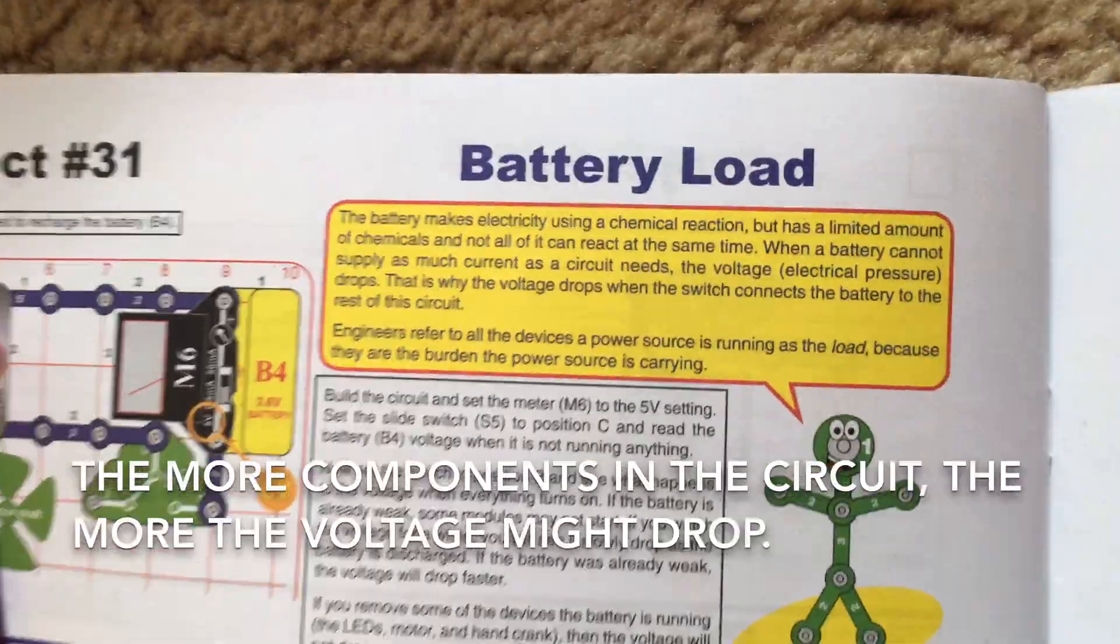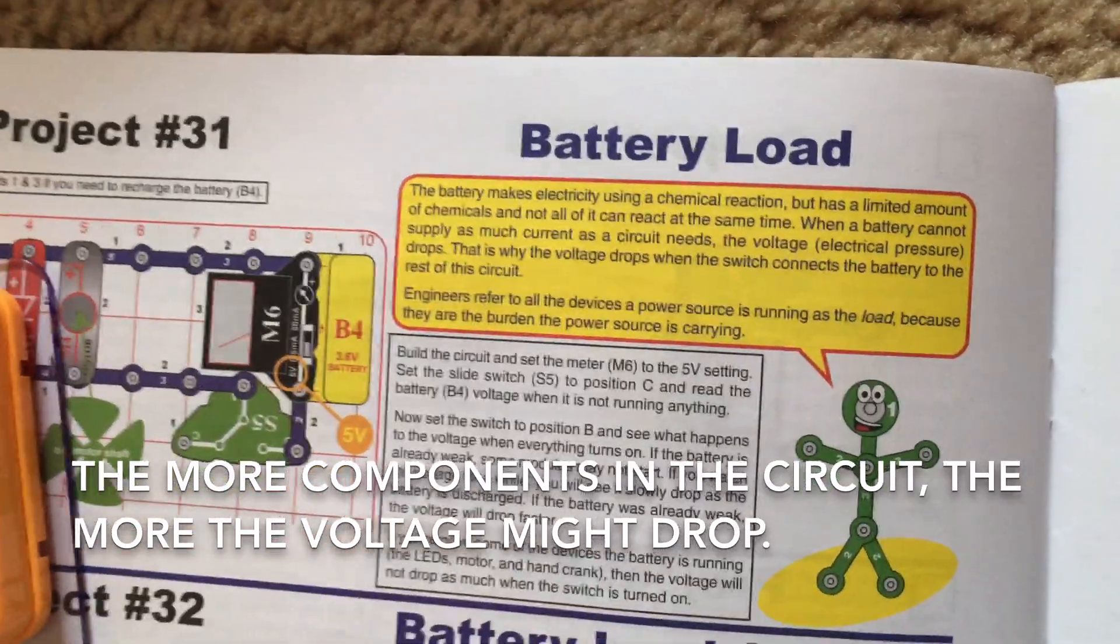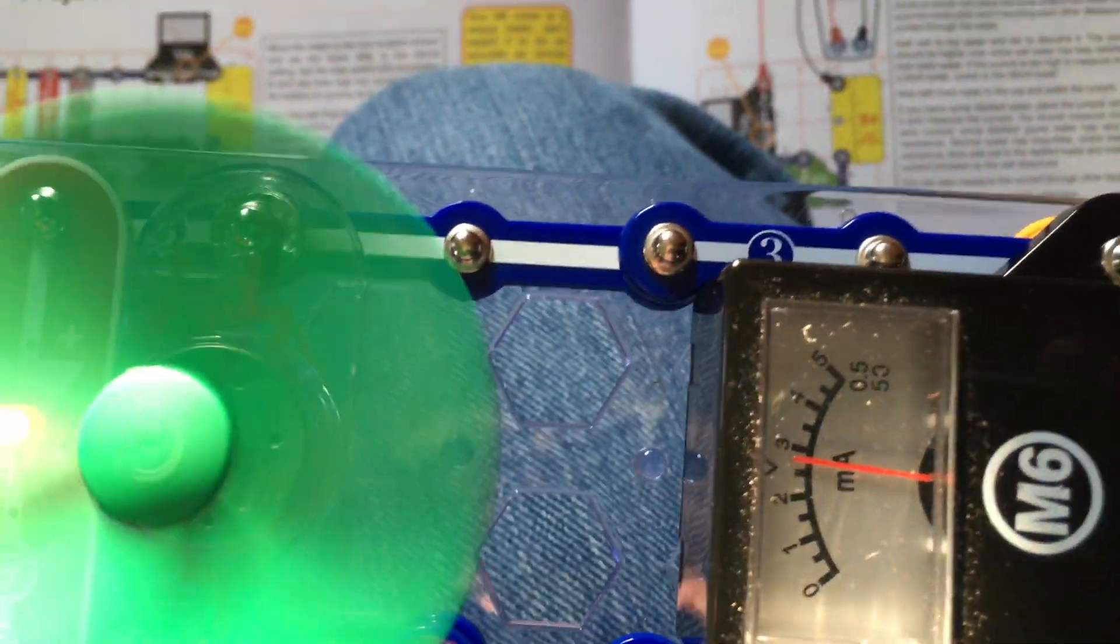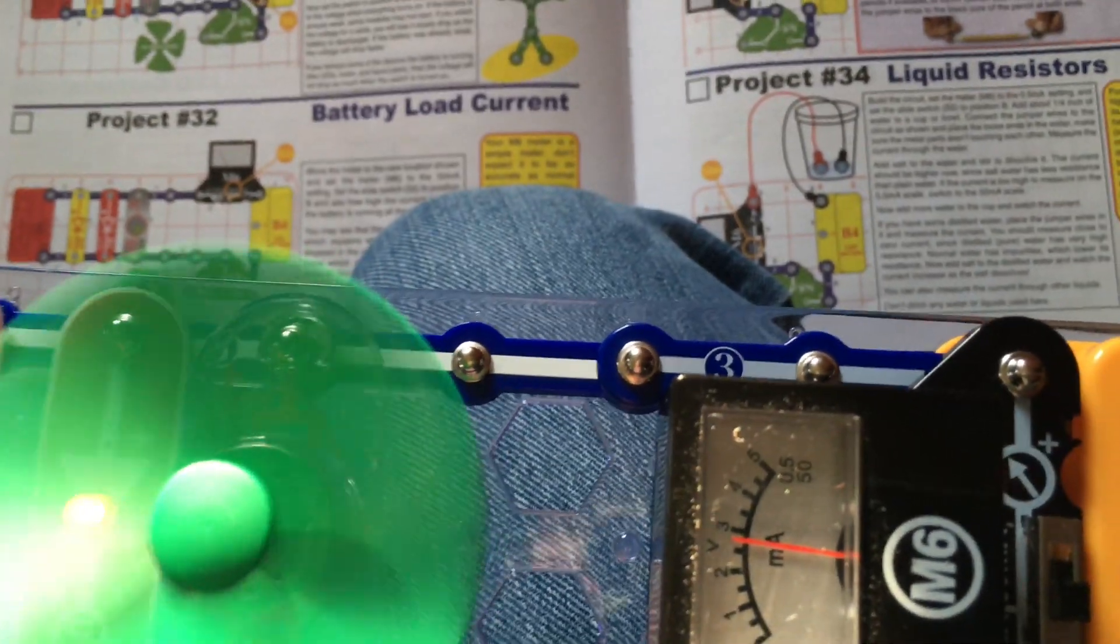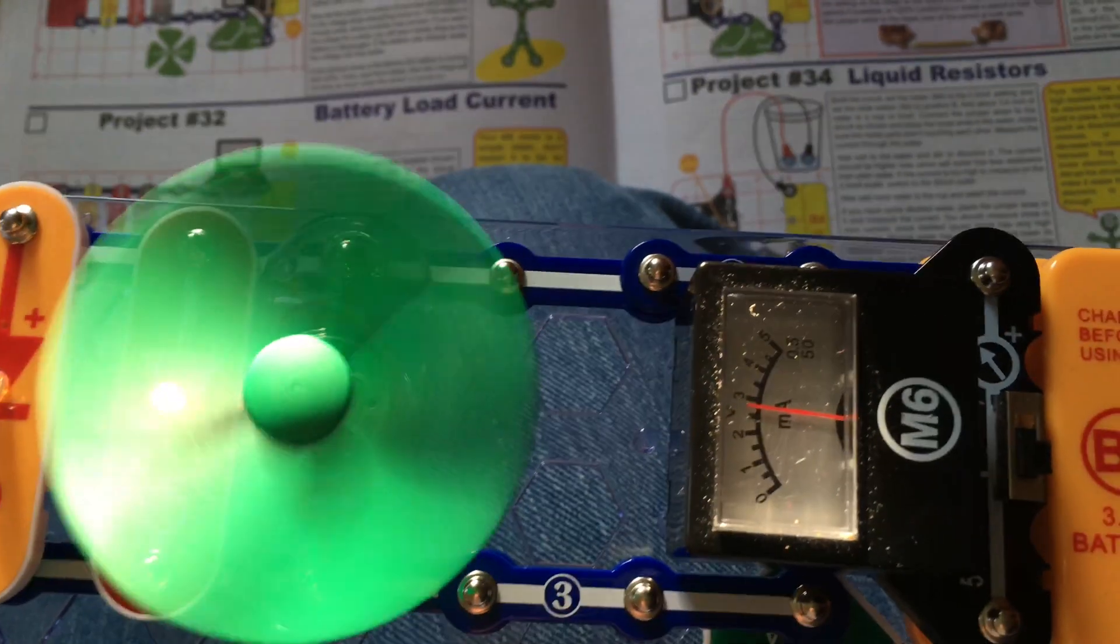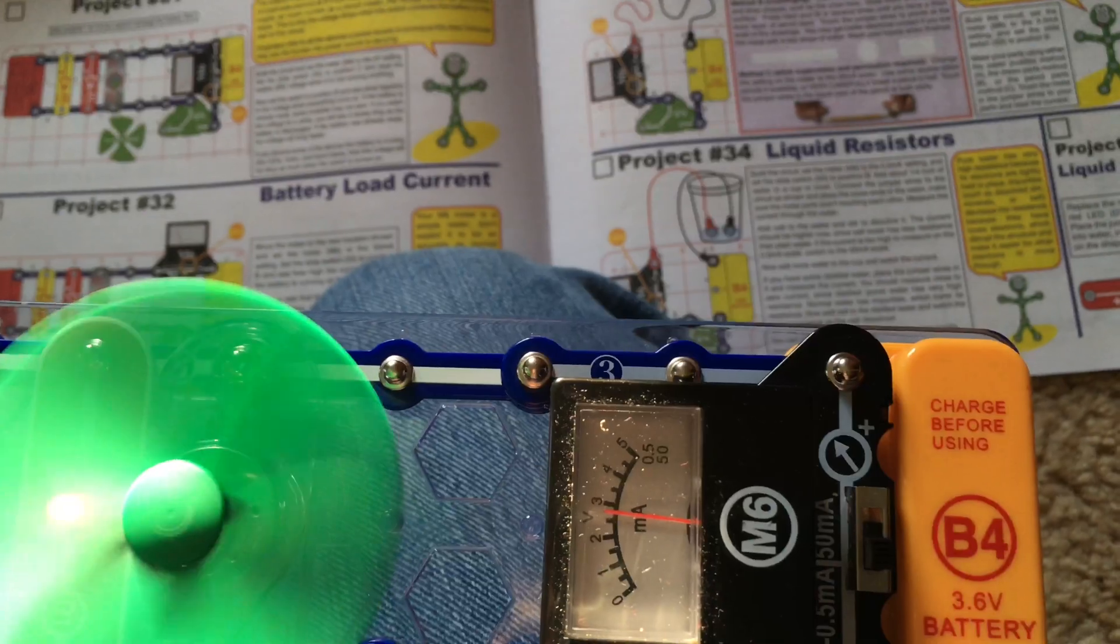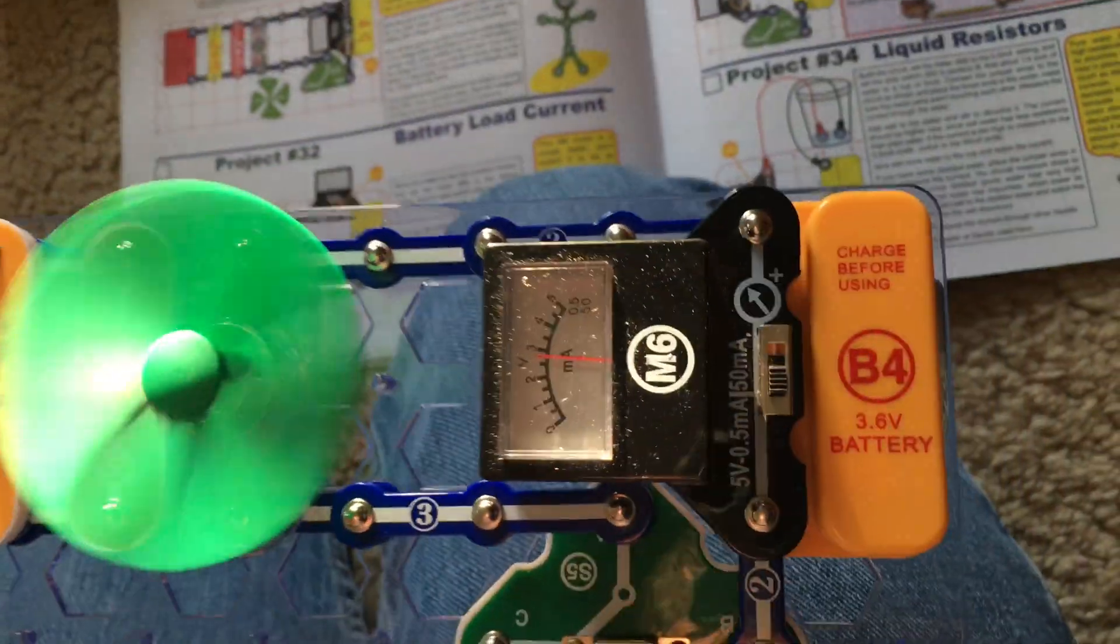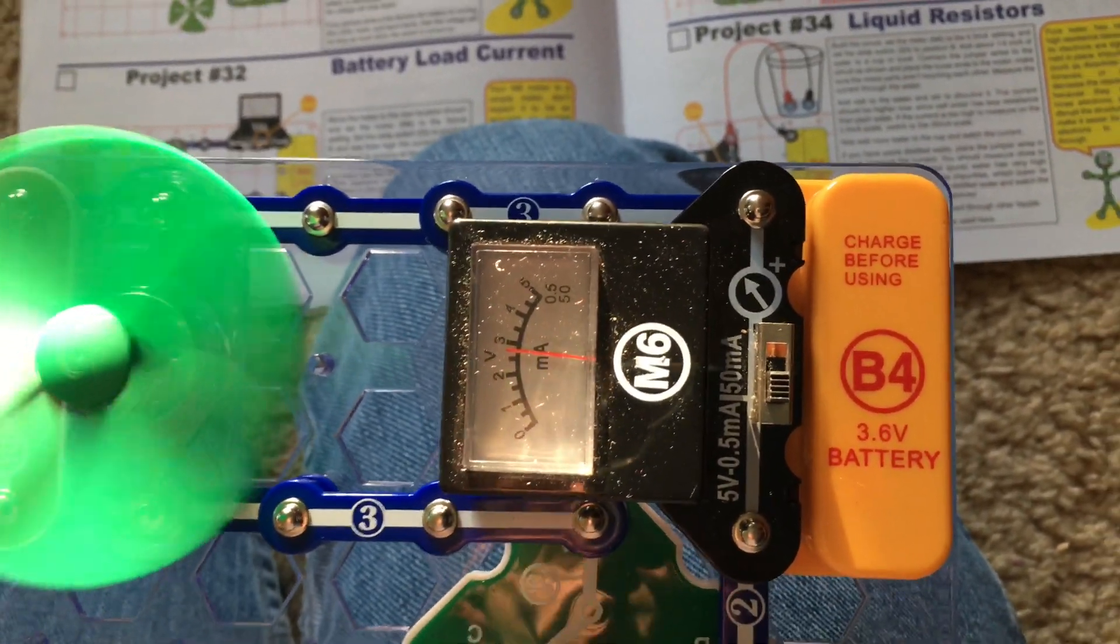The reason the voltage dropped when I turned on the slide switch is because even though the battery uses chemical reactions to make electricity, there is only a limited amount of chemicals and not all can react simultaneously. When a battery cannot supply as much current as the circuit needs, the voltage or electrical pressure will drop.